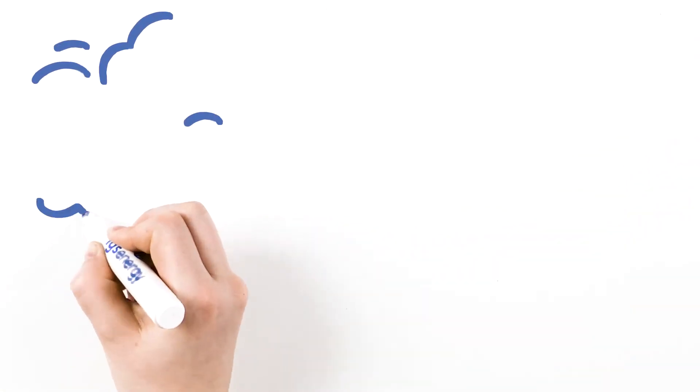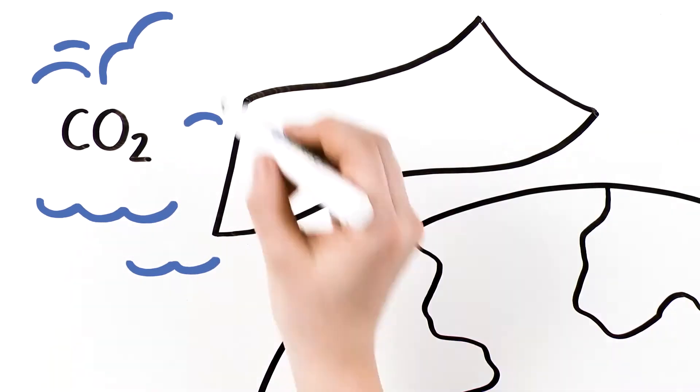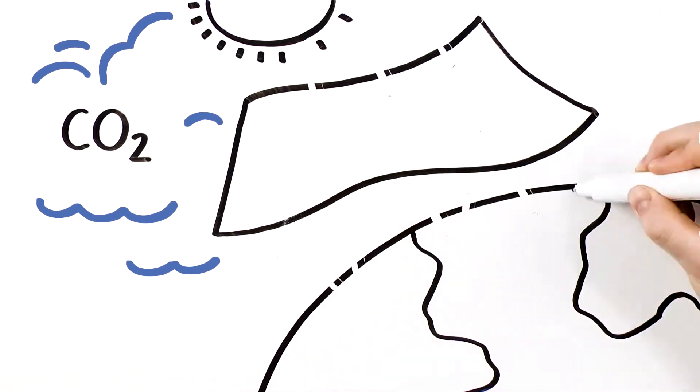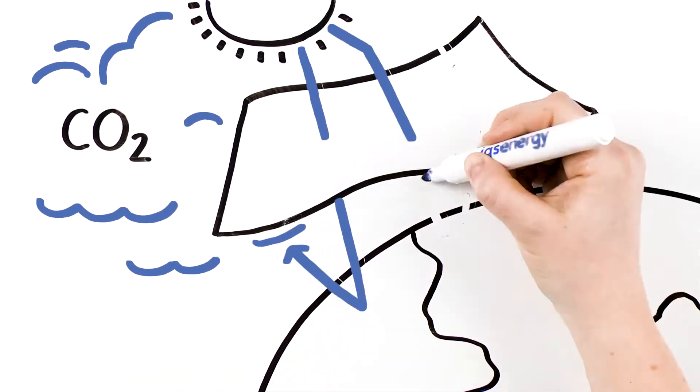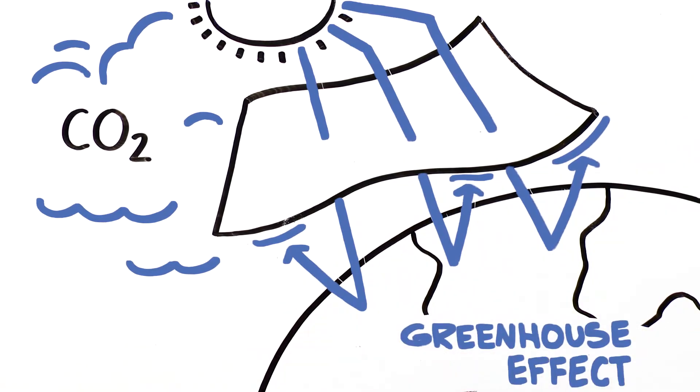Greenhouse gases, and most notably CO2, or carbon dioxide, act like an invisible blanket in our atmosphere, letting the sun's rays in, but not allowing the heat produced by these rays back out. This creates what's known as the greenhouse effect.